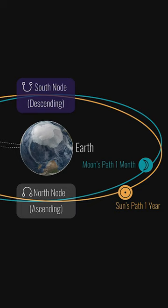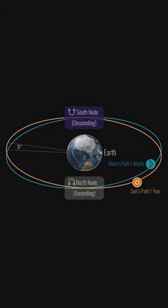In astrology, the nodes are not planets, but they are as significant as any of the planets.